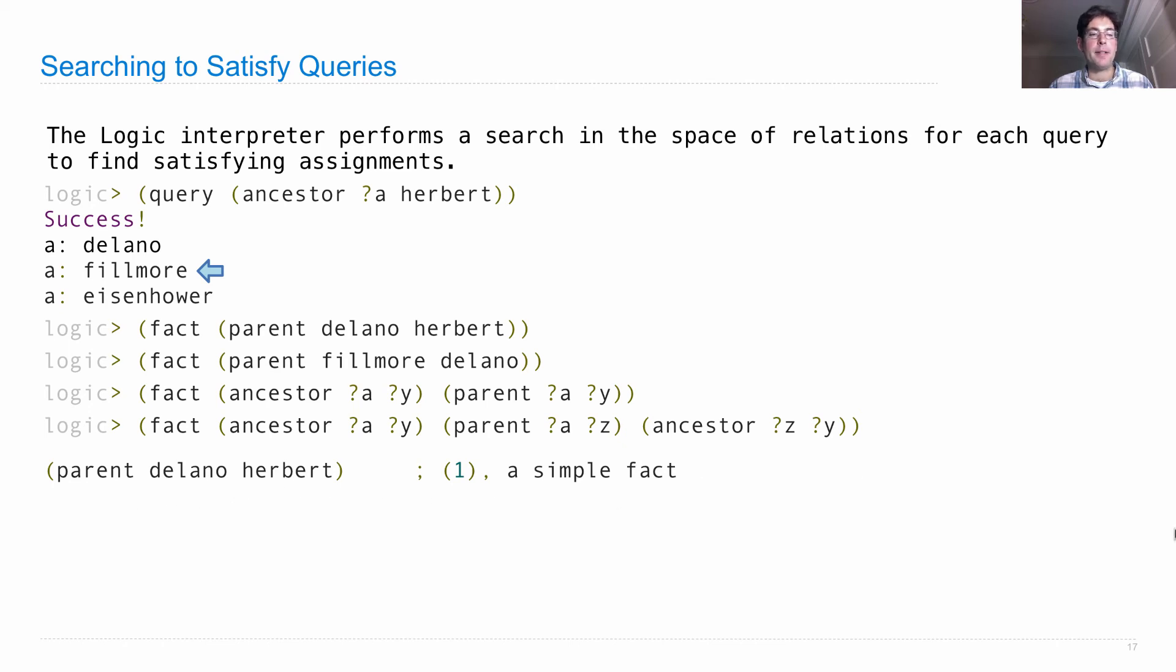So parent Delano Herbert is a simple existing fact. From that it can derive ancestor Delano Herbert. How does it do that? It knows that parent Delano Herbert, so assignment of A to Delano and Y to Herbert, is something that's already true. And so using that same assignment, Delano Herbert gives us the fact that Delano Herbert is in an ancestor relation. Okay, so this is the first fact we've used. This is the second fact we've used, which we derived from the first fact and this first ancestor relation.